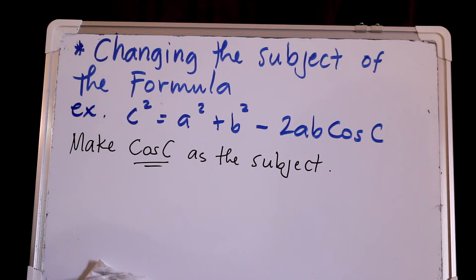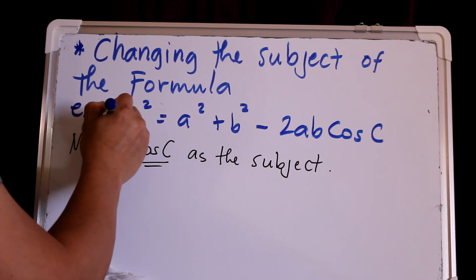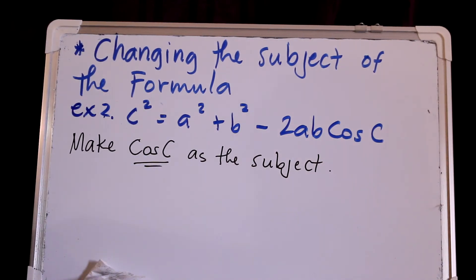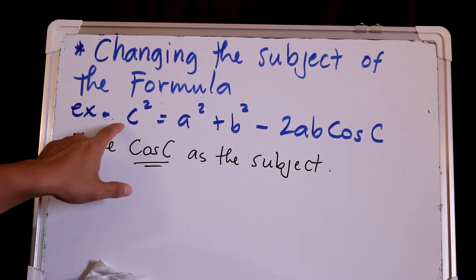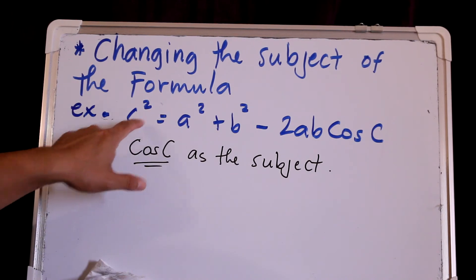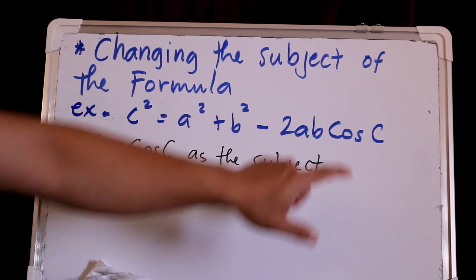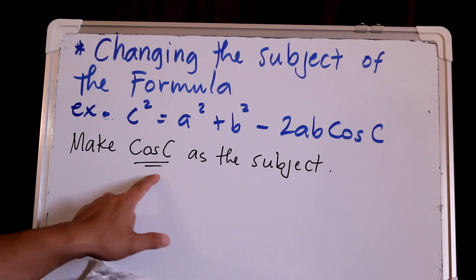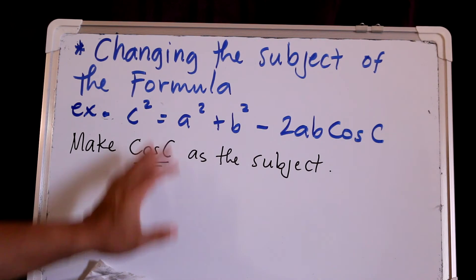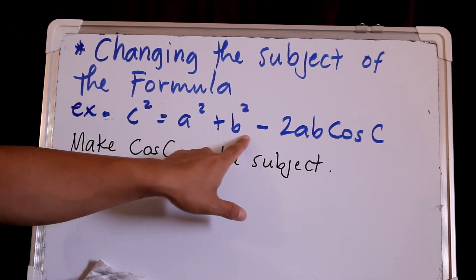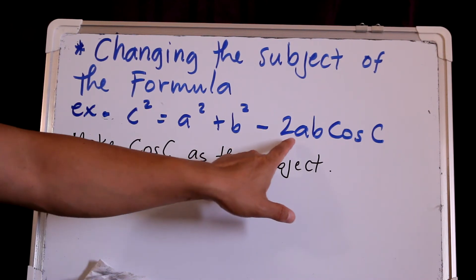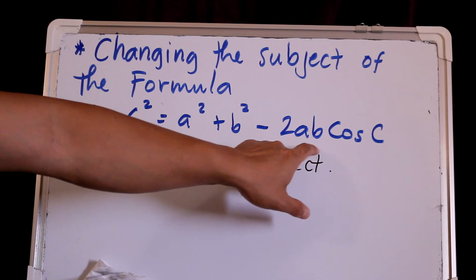Let's try another example — example 2. We have here the cosine law formula, also called the cosine rule. So C squared equals A squared plus B squared minus 2AB cosine C. Now we want cosine C to be the subject of the formula.